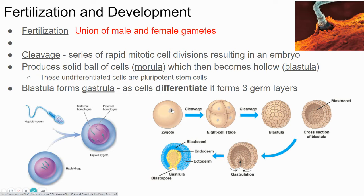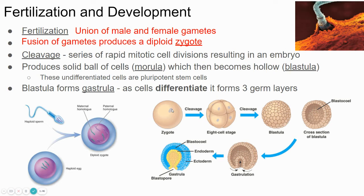Then the zygote starts to divide. That single cell goes through the process of mitosis and splits into two cells, then four cells, then eight cells, and so forth. That process is called cleavage — the splitting of that cell many times. It forms a little solid ball of cells at first, and then it starts to become a hollow ball of cells called the blastula.